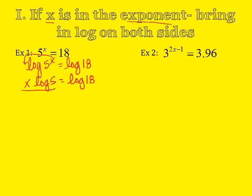Now I need to isolate x, so I divide by the log of 5. Don't just divide by 5, you have to divide by the logarithm of 5. These will cancel, and you'll actually type this in your calculator. So you have the log of 18 divided by the log of 5.